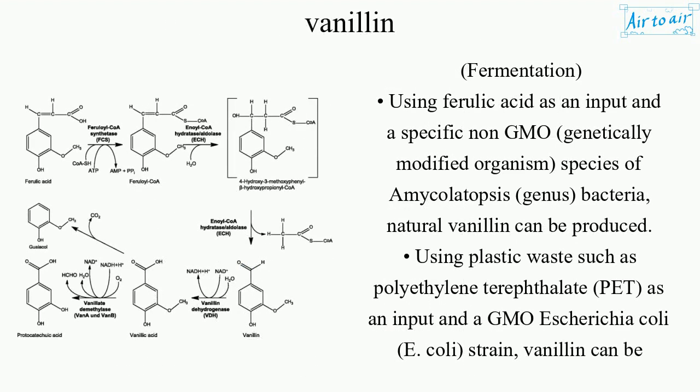Fermentation: using ferulic acid as an input and a specific non-GMO species of Amycolatopsis — a genus of bacteria — natural vanillin can be produced.